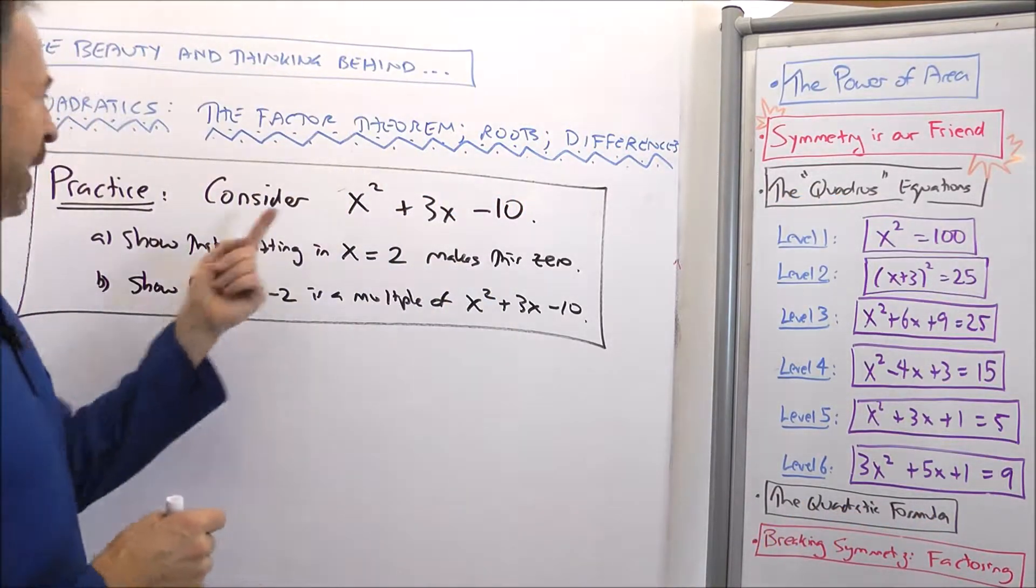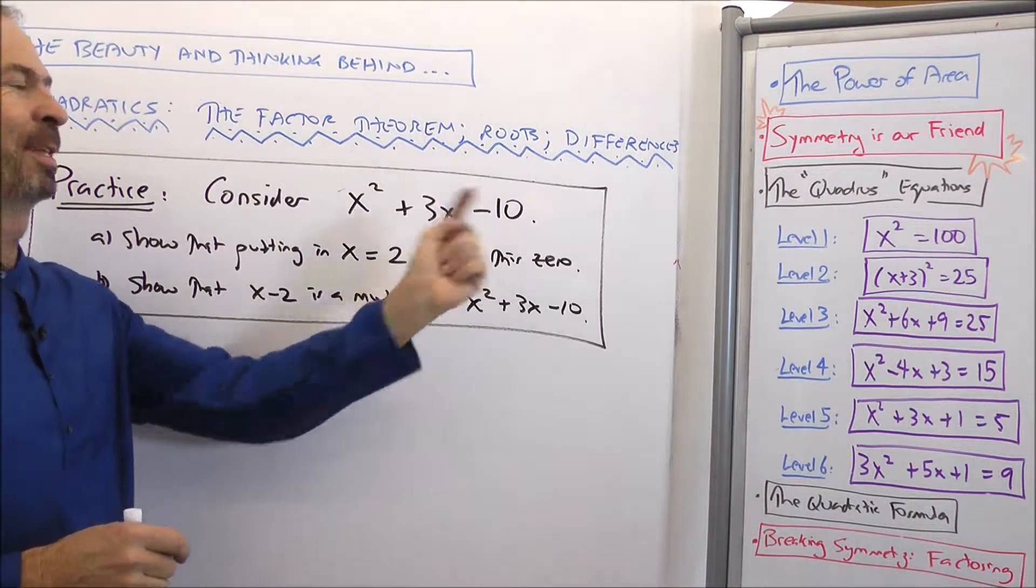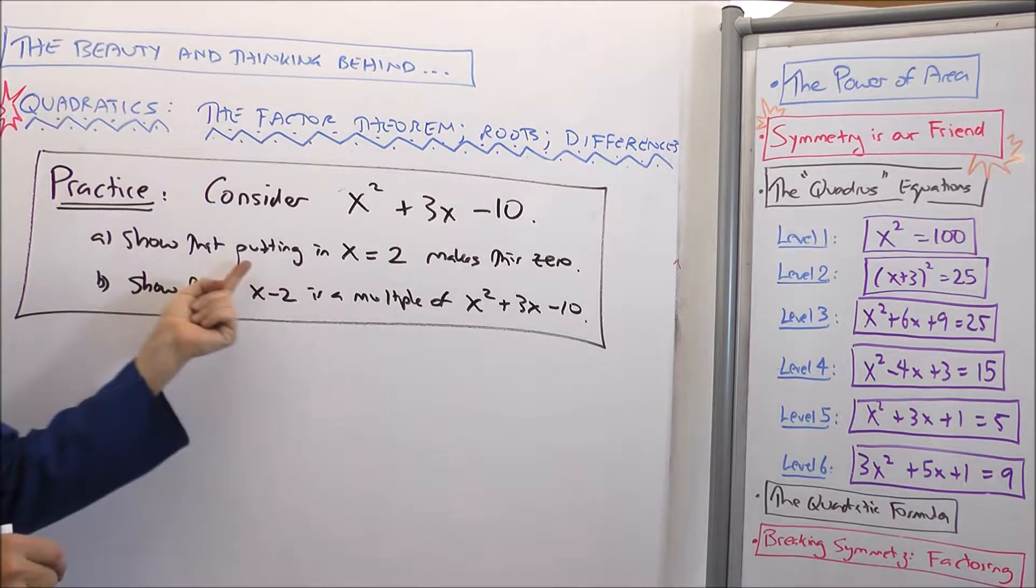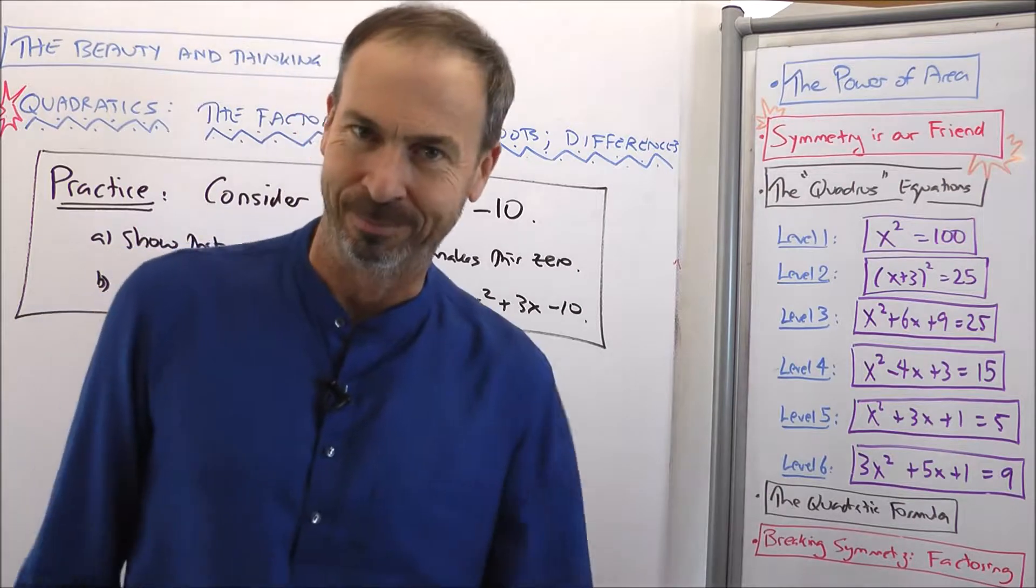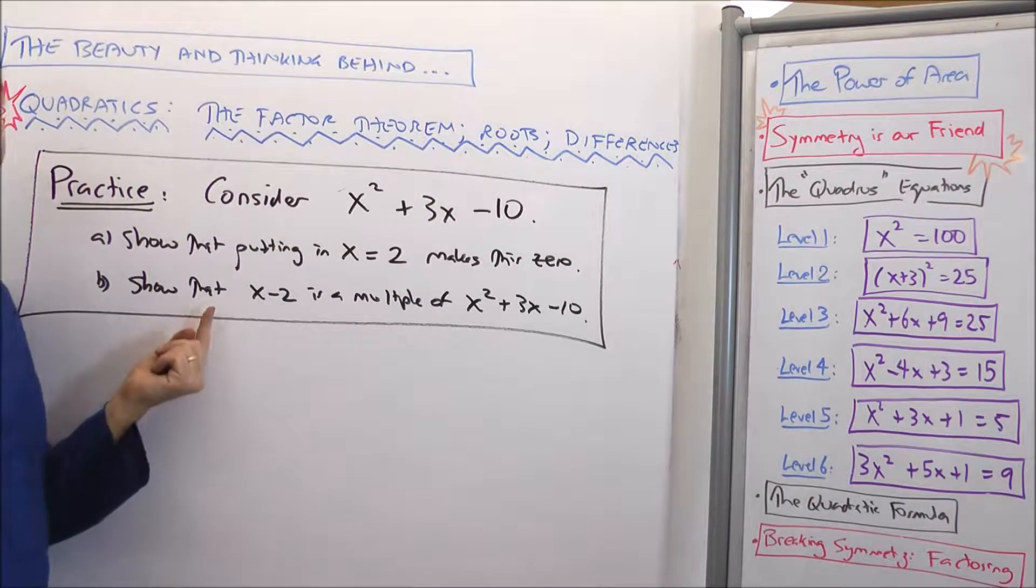Ok, here's a practice question. Consider the quadratic x² + 3x - 10. First of all, show that putting in x equals 2 makes this expression give 0. And then secondly,